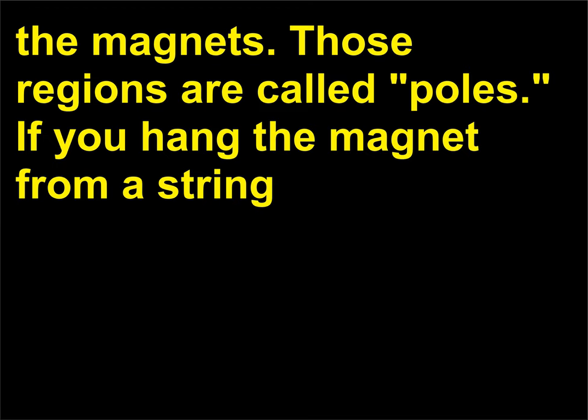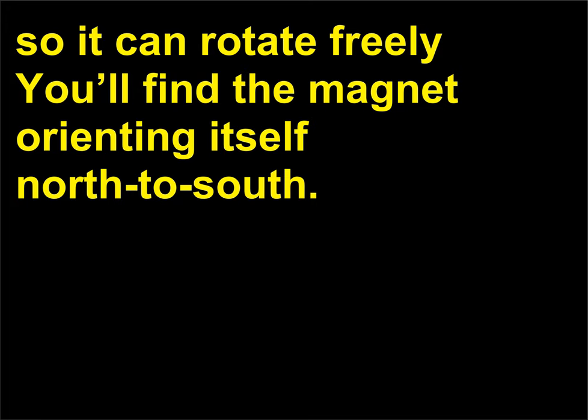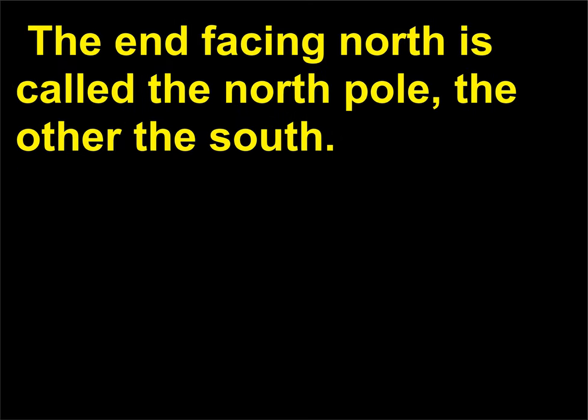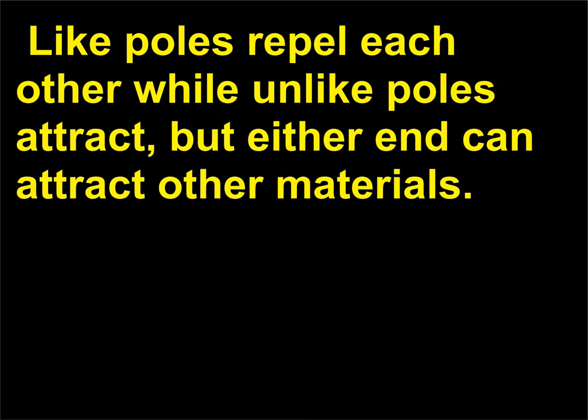If you hang the magnet from a string so it can rotate freely, you'll find the magnet orienting itself north to south. The end facing north is called the north pole, the other the south. Like poles repel each other while unlike poles attract, but either end can attract other materials.